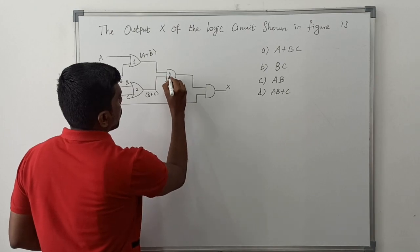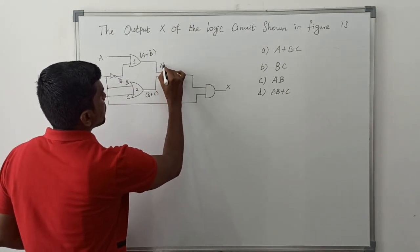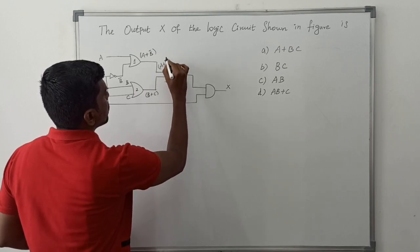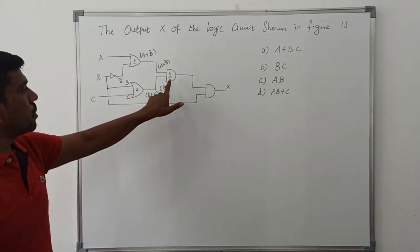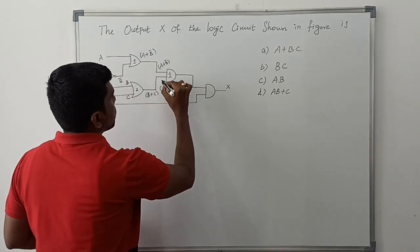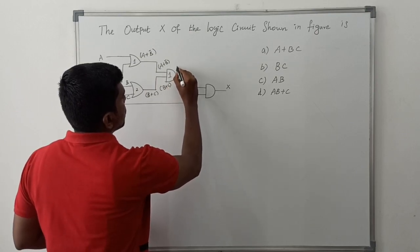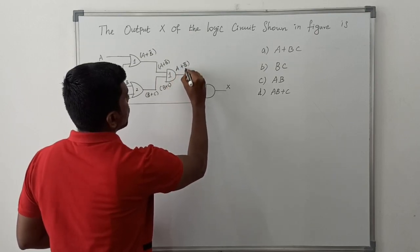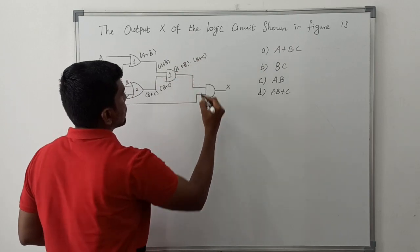Then come to AND operation. The first AND gate input is A plus B bar and second input B plus C. So output of the first AND gate, just for multiplication of these two sum terms: (A plus B bar) dot (B plus C).